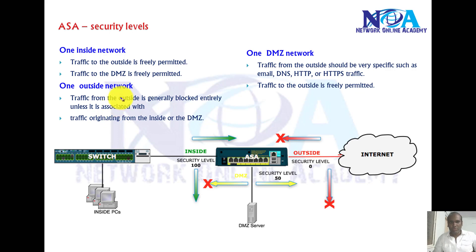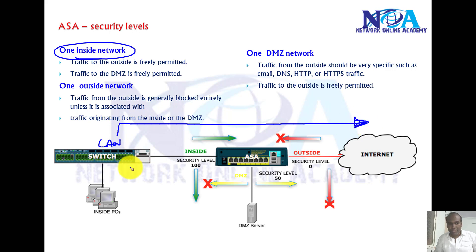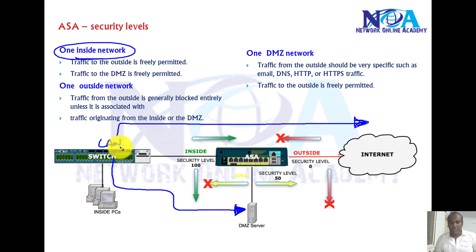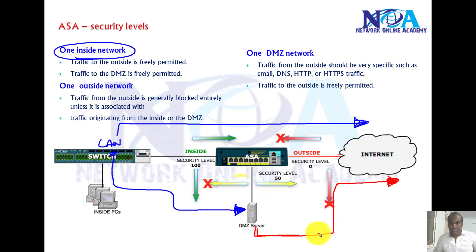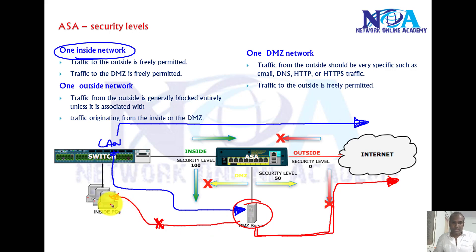In most networks the requirement is: from the inside network, all users in the LAN should be able to access the internet. At the same time, users in the LAN should be able to access the DMZ. These are common rules, but we can decide what traffic is allowed or not. Generally, DMZ should also be able to access the internet, but traffic from DMZ to inside is mostly restricted — servers generally don't need to access LAN resources.